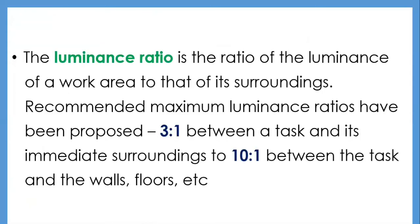The luminance ratio is the ratio of the luminance of a work area to that of its surroundings. Recommended maximum luminance ratios are: 3:1 between a task and its immediate surroundings, and 10:1 between the task and walls, floors, etc. The task should be the brightest area in the visual field to take advantage of the phototropic response. This precludes the use of materials such as white formica for desktops, since the luminance ratio between white paper and the desktop would be too low. Wood or pastel-colored finishes are preferable.